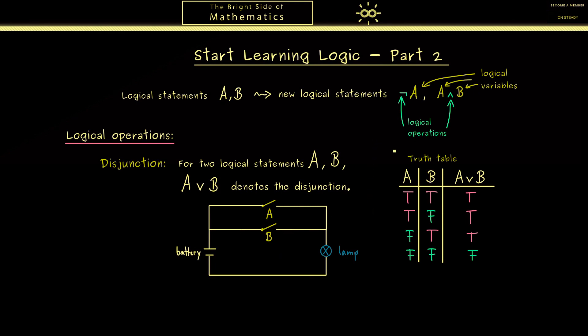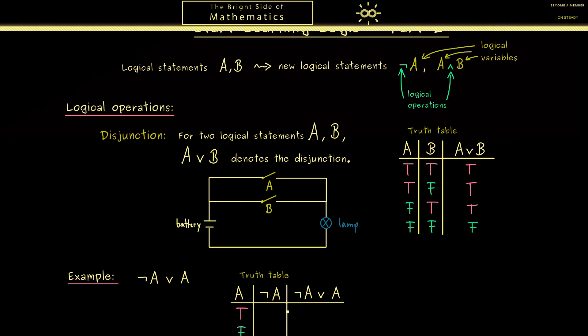Having these logical operations, we can combine them in a lot of ways to get out new logical statements. Therefore, the natural thing to do is writing down a truth table for such a new combination. Let's consider a simple example here. What about not A or A? Here you see what we usually assume is that the NOT operator binds closest, therefore we don't need any parentheses here.